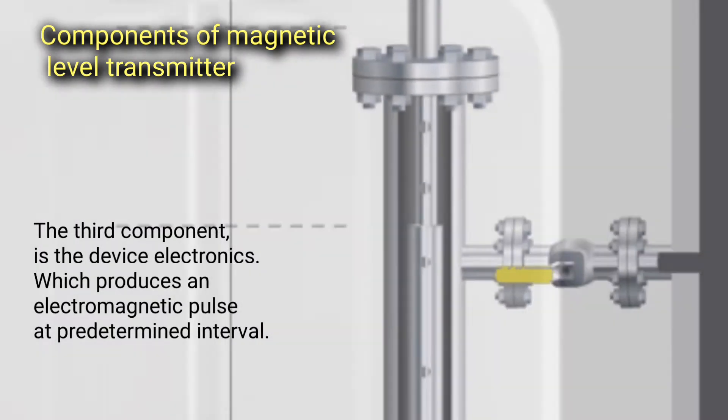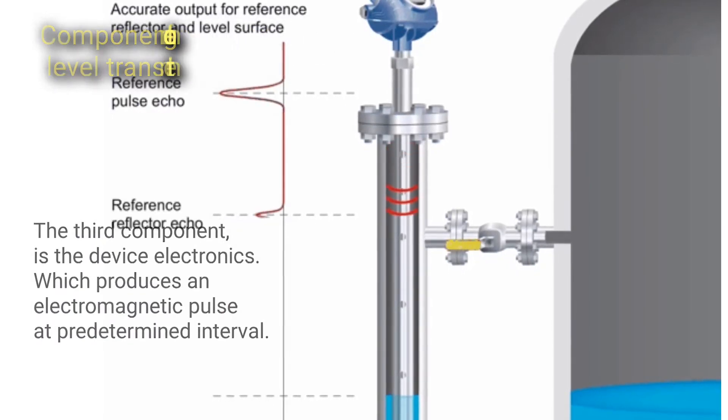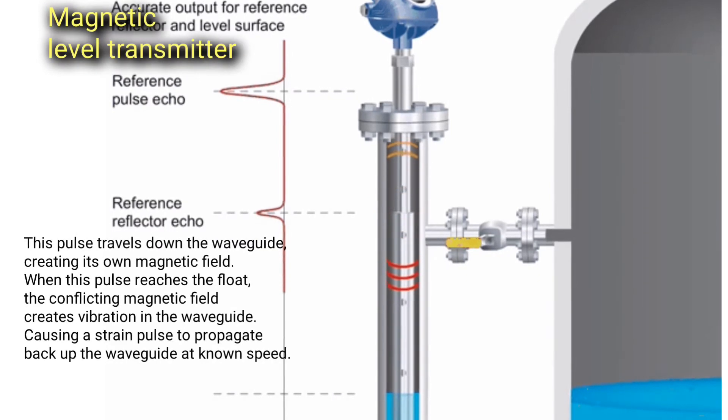The third component is the device electronics, which produces an electromagnetic pulse at predetermined intervals.